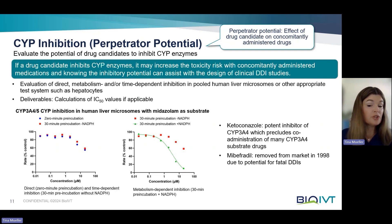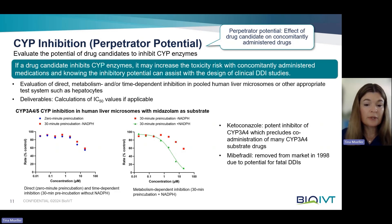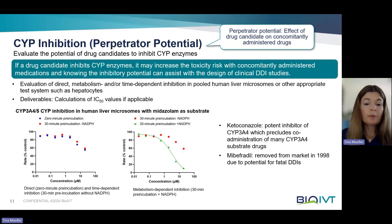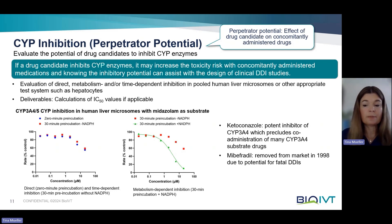CYP inhibition is a major contributor to drug-drug interaction. Just to name two examples: ketoconazole is a topical antifungal drug and a potent inhibitor of CYP3A4, which often precludes co-administration of drugs that are metabolized by CYP3A4. And similarly, mibefradil is a non-selective calcium channel blocker used to treat hypertension and angina pectoris — it was removed from the market due to the potential for fatal DDI, mainly caused by CYP inhibition.